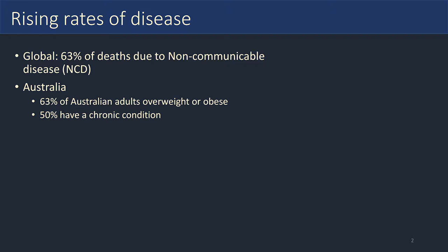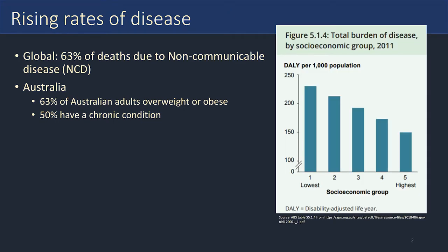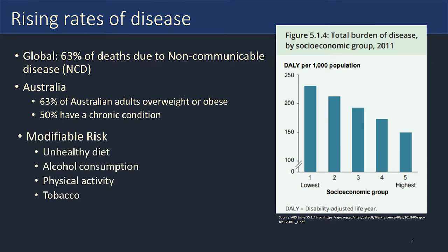A bit of background on why I'm doing this. We've got rising rates of disease globally — about 63% of deaths are now due to non-communicable diseases like cancer, cardiovascular disease, and obesity. In Australia about 63% of adults are overweight or obese and 50% are managing a chronic condition. This isn't shared equally across demographic groups — the lowest socioeconomic groups are carrying about one and a half times the burden of disease than the highest group. These increasing rates of poor health have been attributed to four modifiable risk factors, one of which is unhealthy diet, and that's what I'm looking at today.